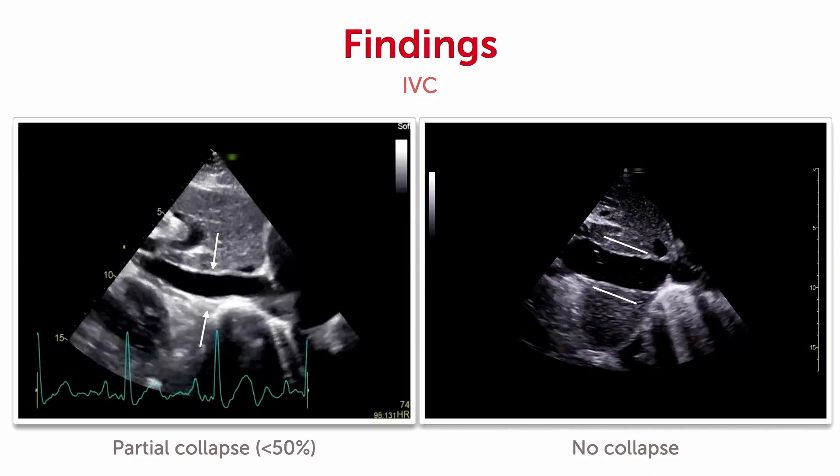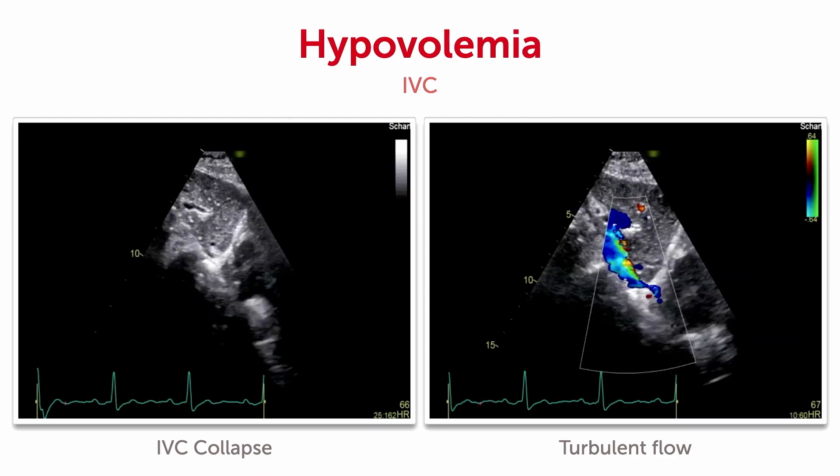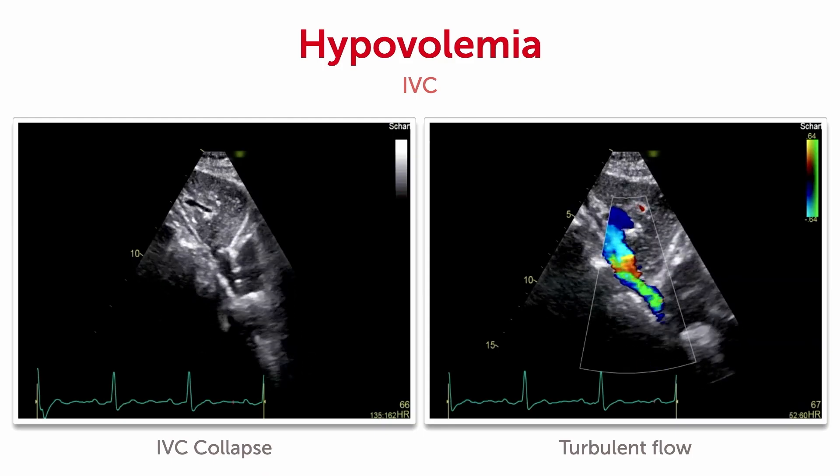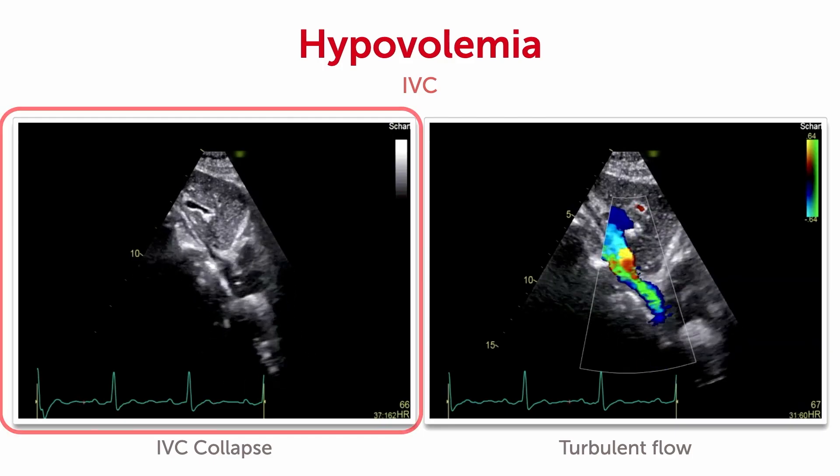In which situations in shock would you expect a very narrow IVC? If patients are hypovolemic — for example if they're bleeding, or if they have too many diuretics on board — in this situation you will have a complete collapse of the IVC, as you can nicely see on this example on the left.